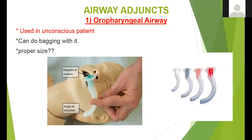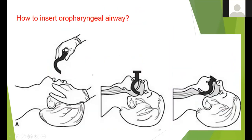Do not use too small or too big an oropharyngeal airway. It can help with bagging effectively. This is how to insert the oropharyngeal airway — use an inverted direction, then rotate it 180 degrees so it is fixed in position.